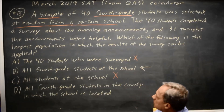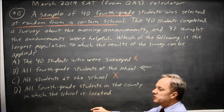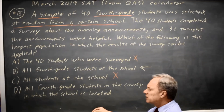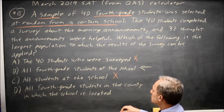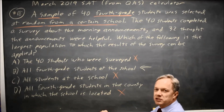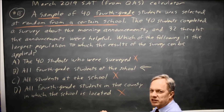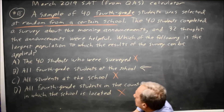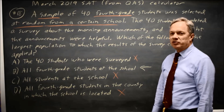Choice D — all 4th grade students in the county — is like generalizing from grapes at my grocery store to grapes at another store. I don't know how fresh the grapes are in another store. I can't conclude that because my grapes were good at my store that another store also has good grapes. Similarly, I can't conclude that because 4th graders at my school like the morning announcements, that 4th graders in other schools with entirely different announcements delivered in a completely different way also think they're helpful.